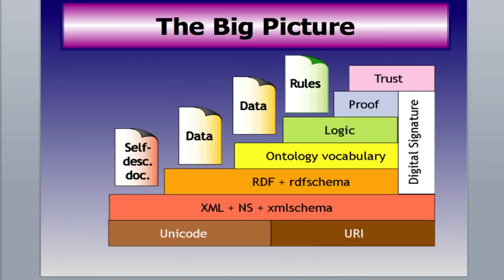With RDF, we'll be able to build an ontology or a vocabulary with basic rules, which ties in with logic. With logic, we'll build proofs that know how things work. Those four layers — the RDF, the ontology, the logic, and the proof — all form a digital signature, so you know a document is what it says it is. That brings us to the top layer, which is trust.